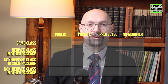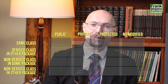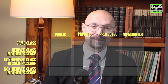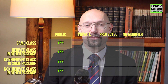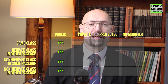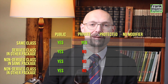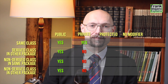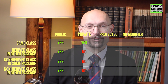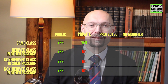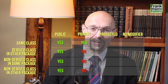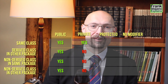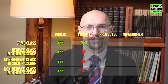I'll fill in the easy parts. When the member is declared public, it can be accessed from anywhere. And when it's declared private, it can only be accessed from within the class where it is defined. Now your turn — are you able to fill in the other two columns correctly?